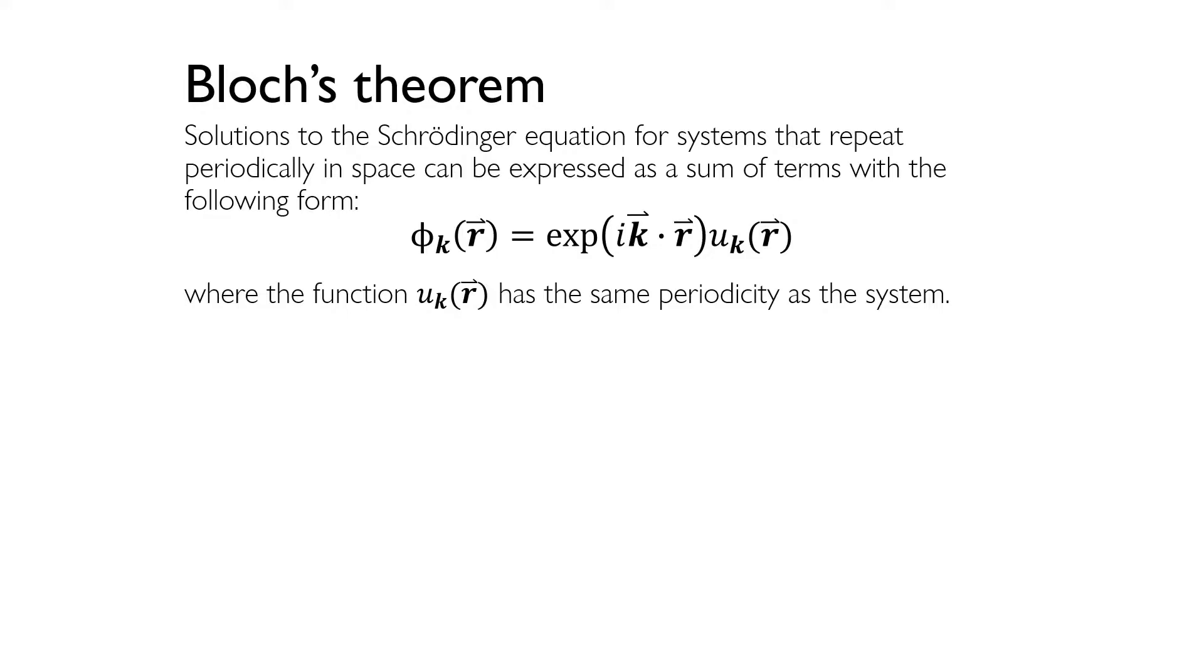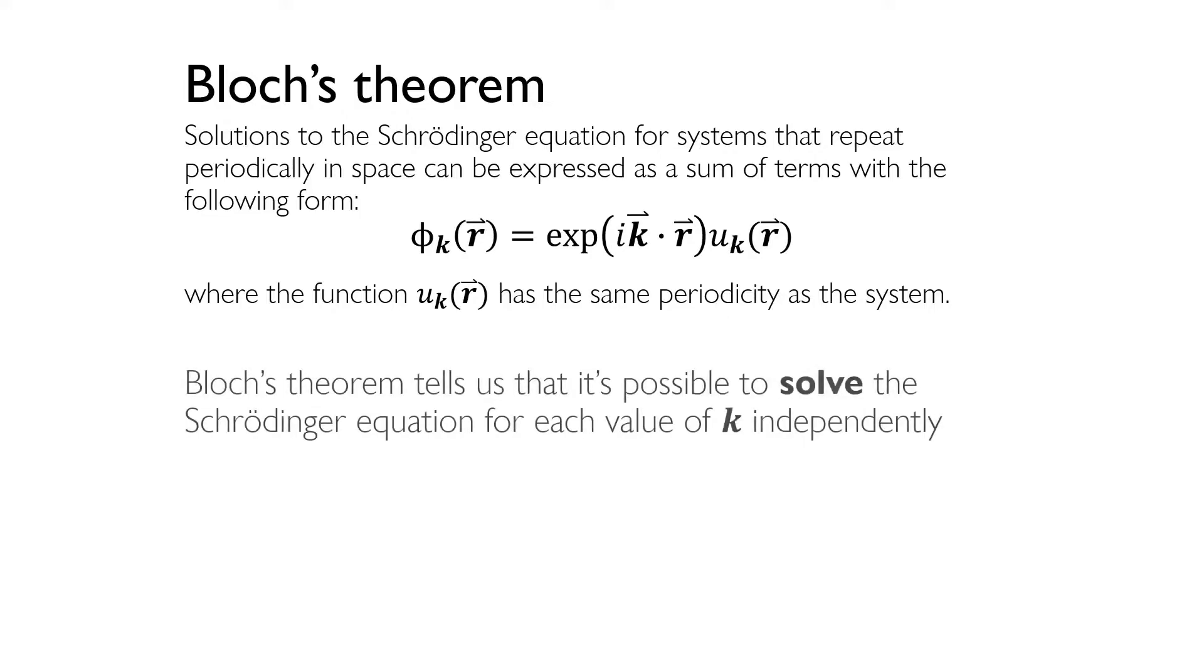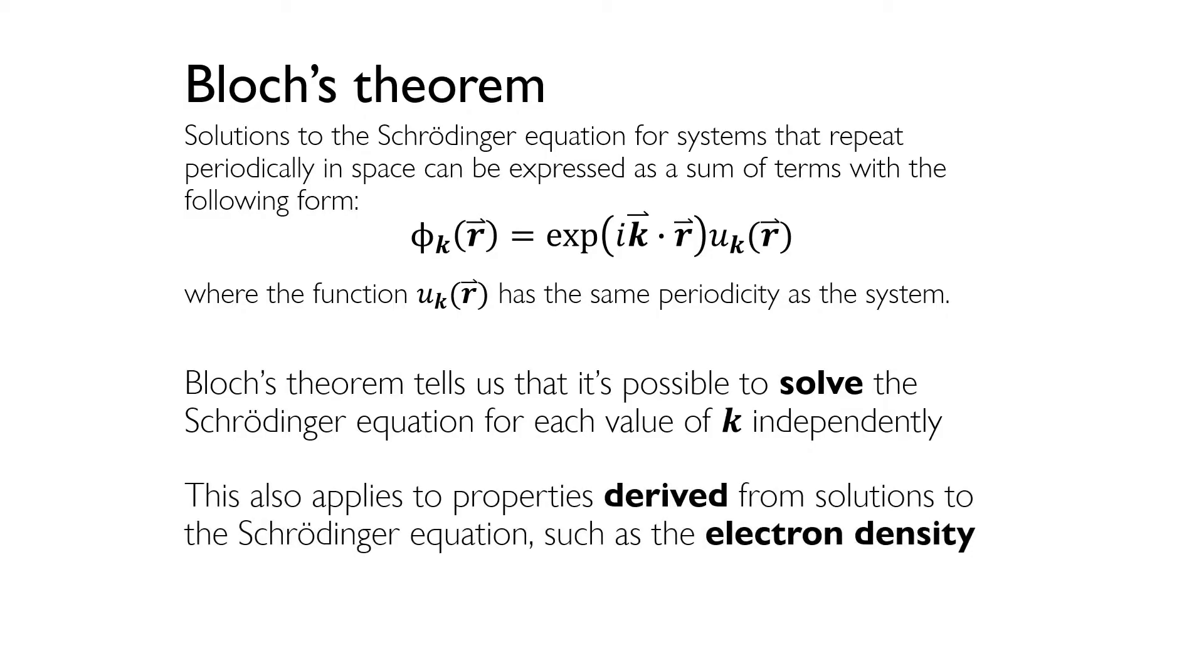The function u k is periodic in space with the same periodicity as the system we're investigating. In the case of a FCC crystal, u of k is periodic in space with the same periodicity as the supercell. What Bloch's theorem tells us is that it's possible to try and solve the Schrodinger equation for each value of k independently. This also applies to quantities derived from solutions of the Schrodinger equation, such as the electron density. Functions that have the form e to the i k dot r are called plane waves, and calculations that make use of them are often called plane wave calculations. The space of vectors r is called real space, and the space of vectors k is called reciprocal, or simply k-space.